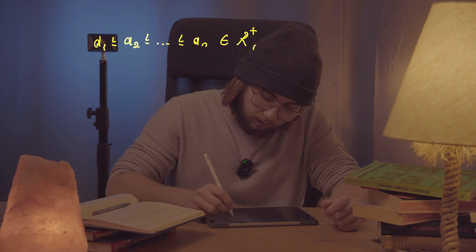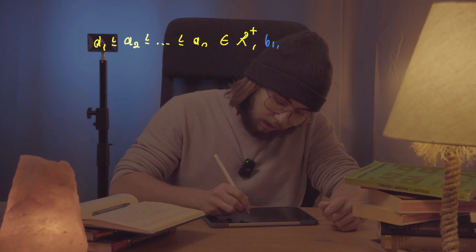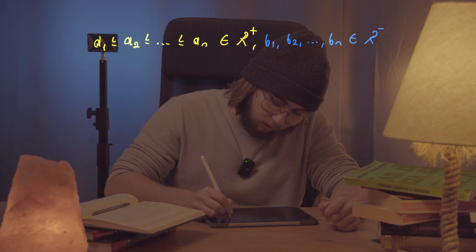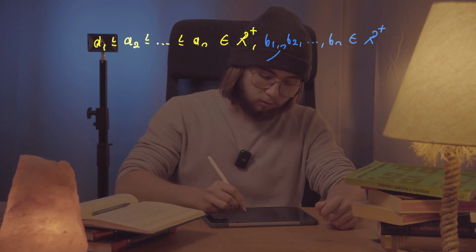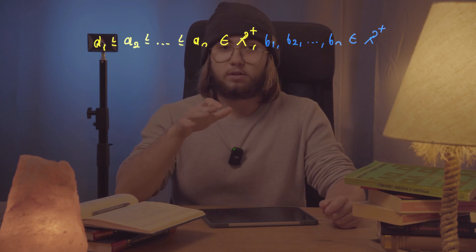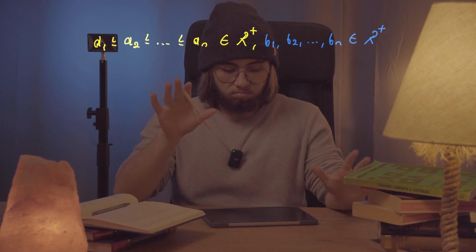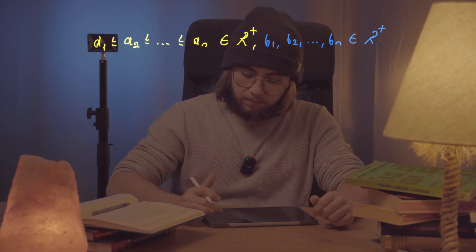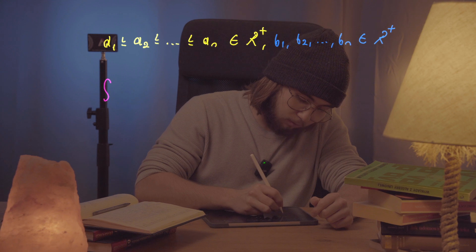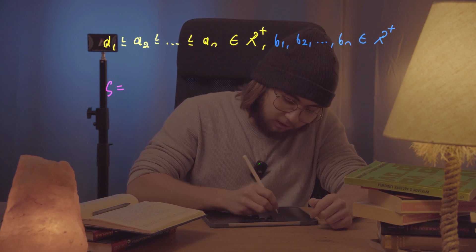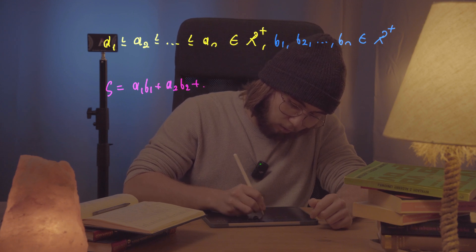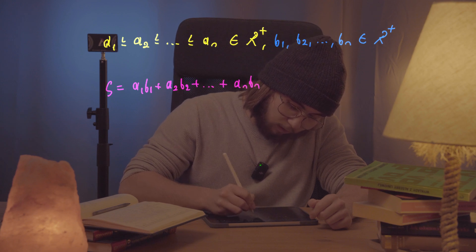I would like to take another sequence — let's call it B₁, B₂, …, Bₙ. Those are also positive real numbers, but this time I'm not saying they are ordered in any kind of way — they're just positive real numbers, that's all we know about them. Now I would like to create a sum S, equal to A₁·B₁ + A₂·B₂ + … + Aₙ·Bₙ.